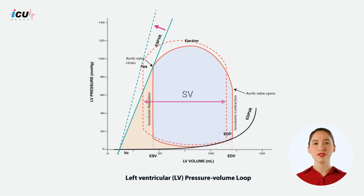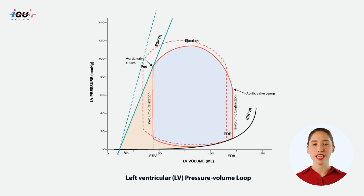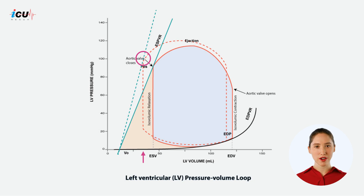and stroke volume (SV). The left ventricle can generate higher pressures at the end of systole for a given end systolic volume. This is reflected in a steeper slope of the ESPVR line.